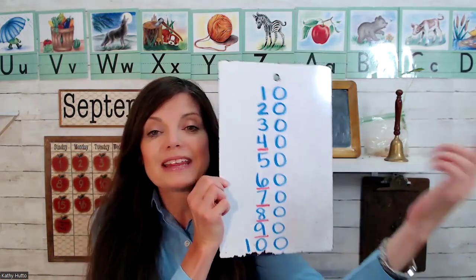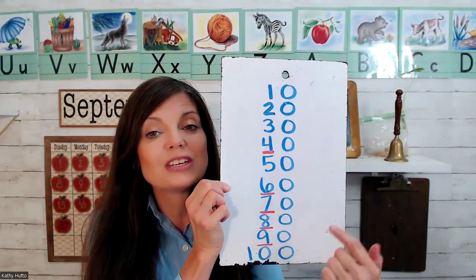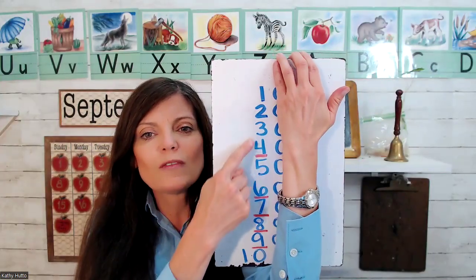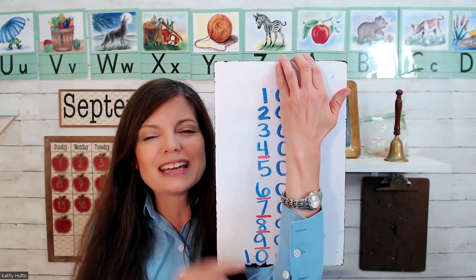If you look carefully, you can see that there's a zero at the end of each of these numbers. If I cover up the zero, though, look, it's just 1, 2, 3, 4, 5, 6, 7, 8, 9, 10. Easy.